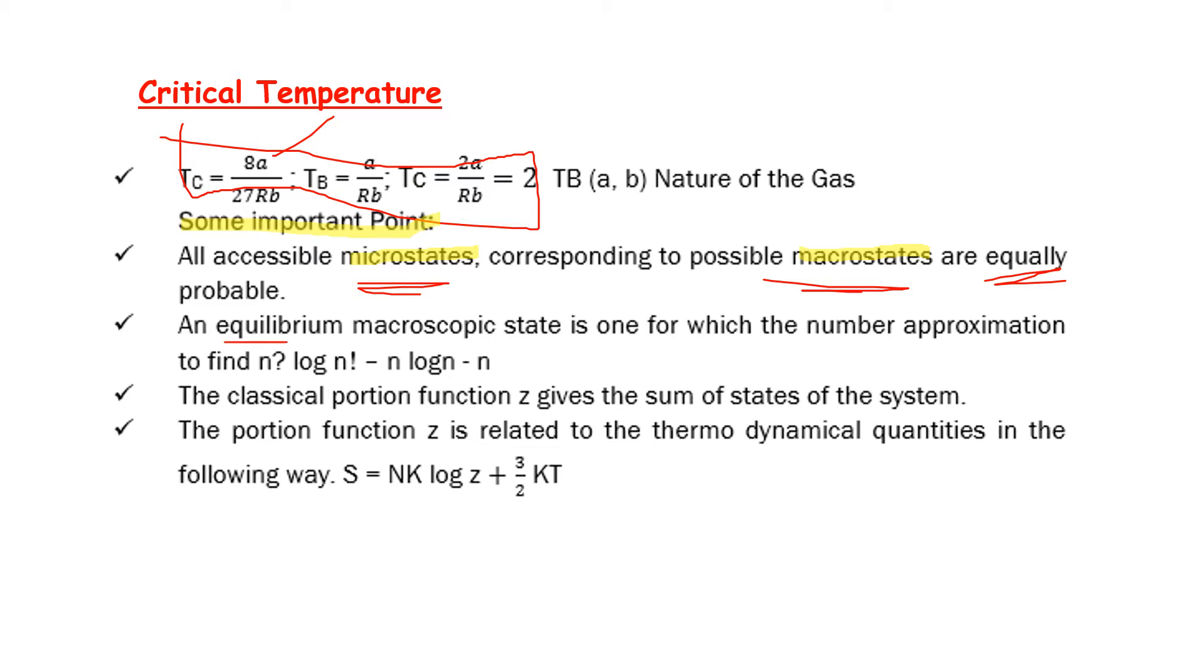An equilibrium macroscopic state is one for which the number approximation to find n is: log n factorial approximately equals n log n minus n. This formula is a very important formula.